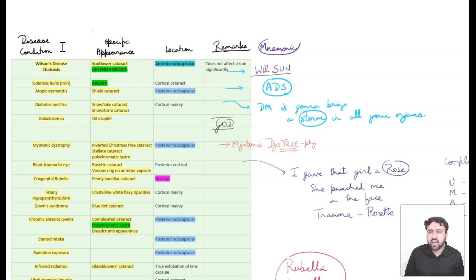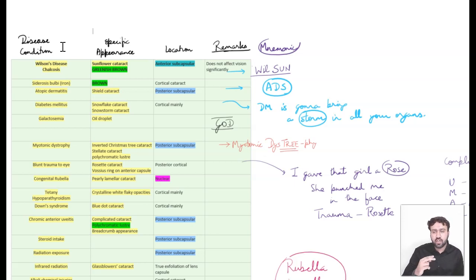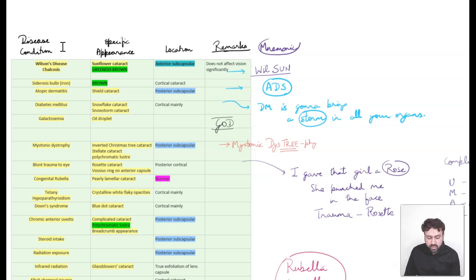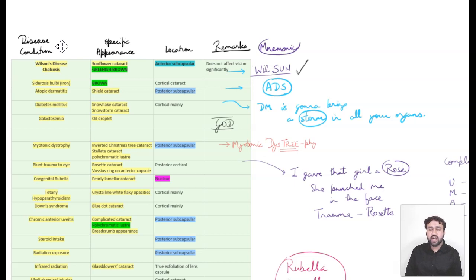The first one is Wilson's disease, which shows sunflower cataract. Wilson's disease is caused by copper deposition, and chalcosis is another condition with copper deposition — so both show sunflower cataract. I remember this by spelling Wilson as W-I-L-S-U-N, where 'sun' tells you sunflower. The second one is atopic dermatitis, which causes shield cataract. I remember this using the mnemonic ADS — atopic dermatitis gives shield cataract, S for shield.